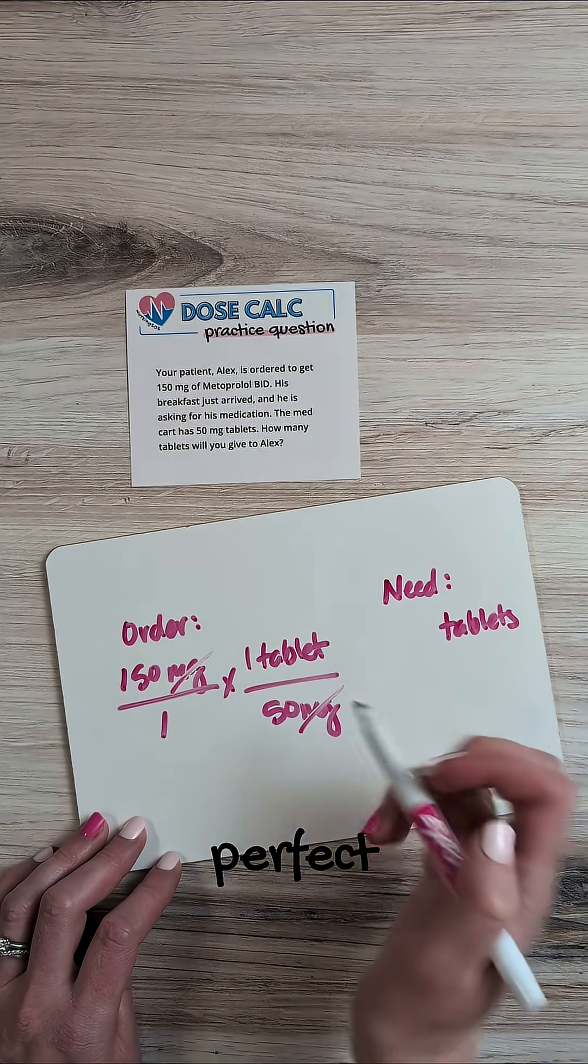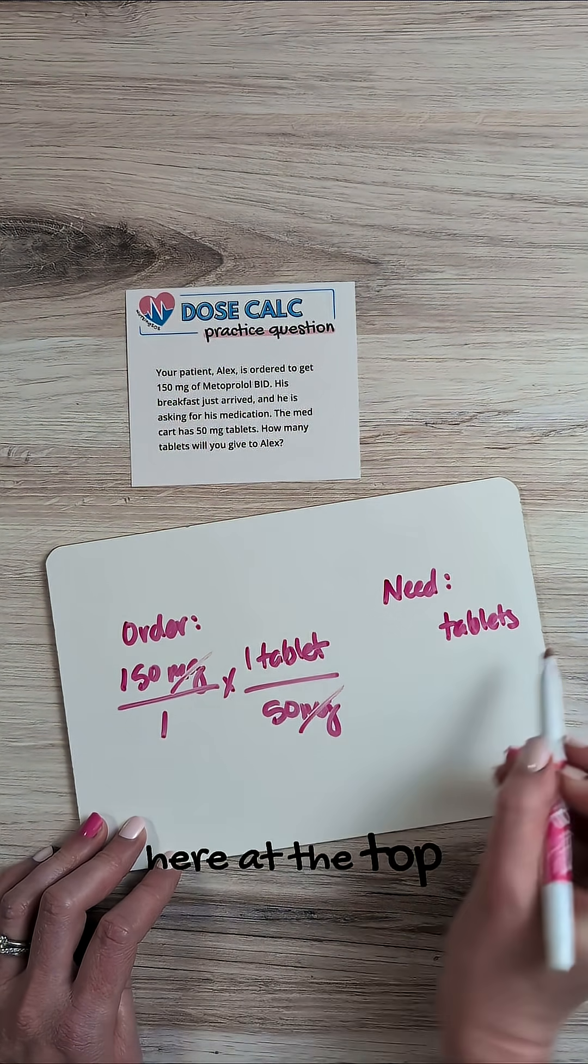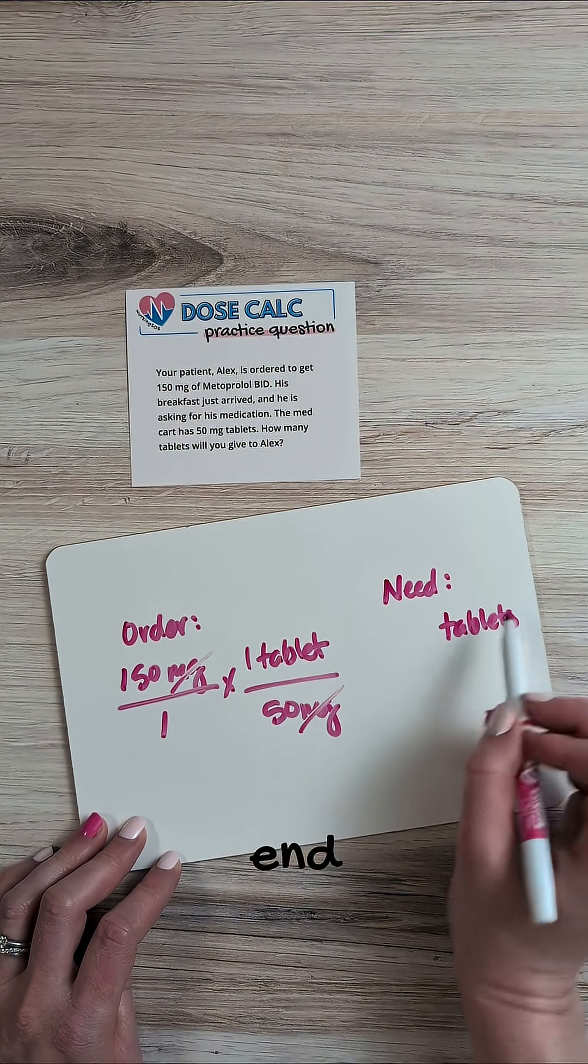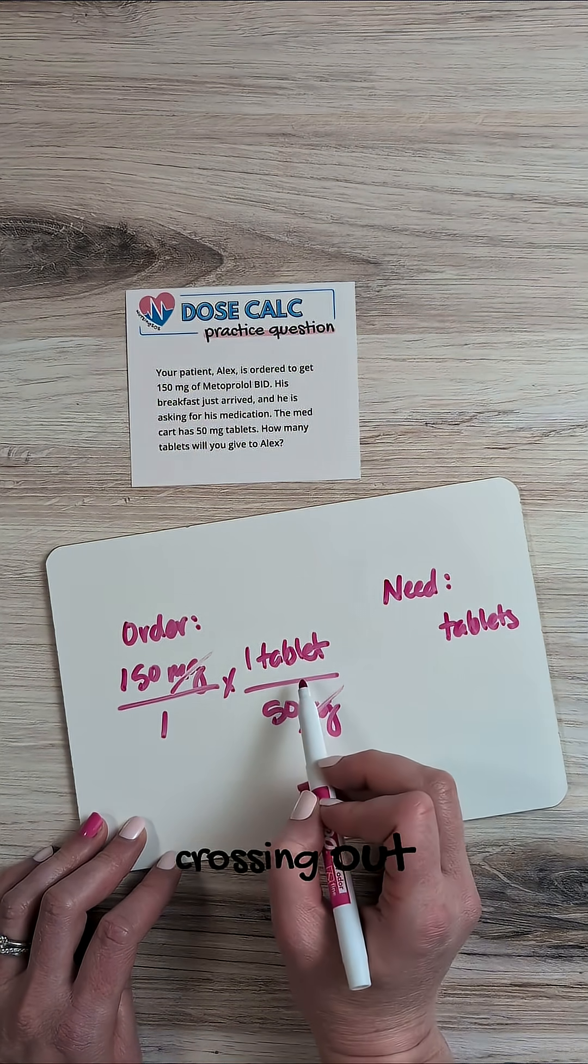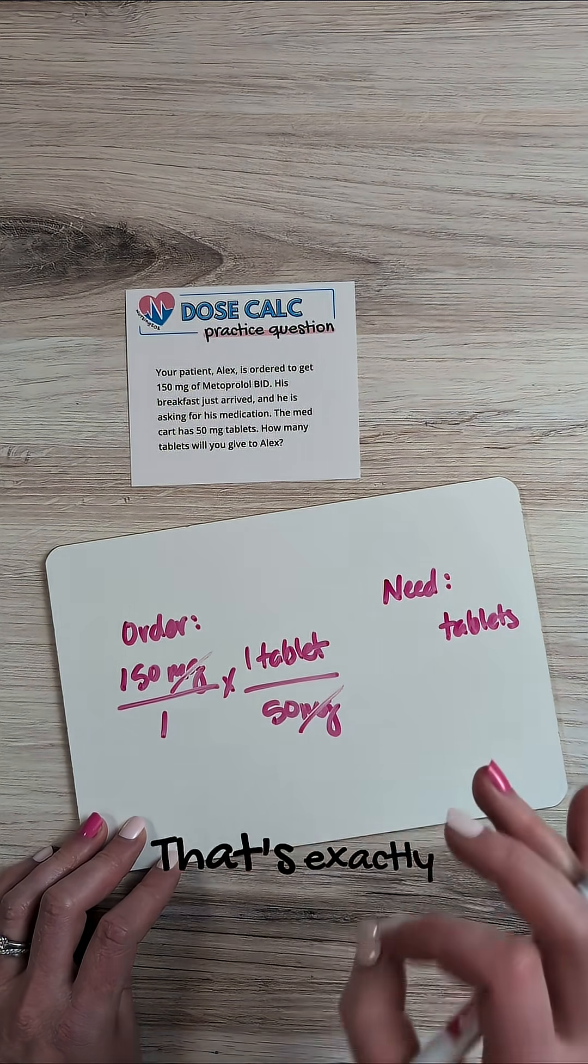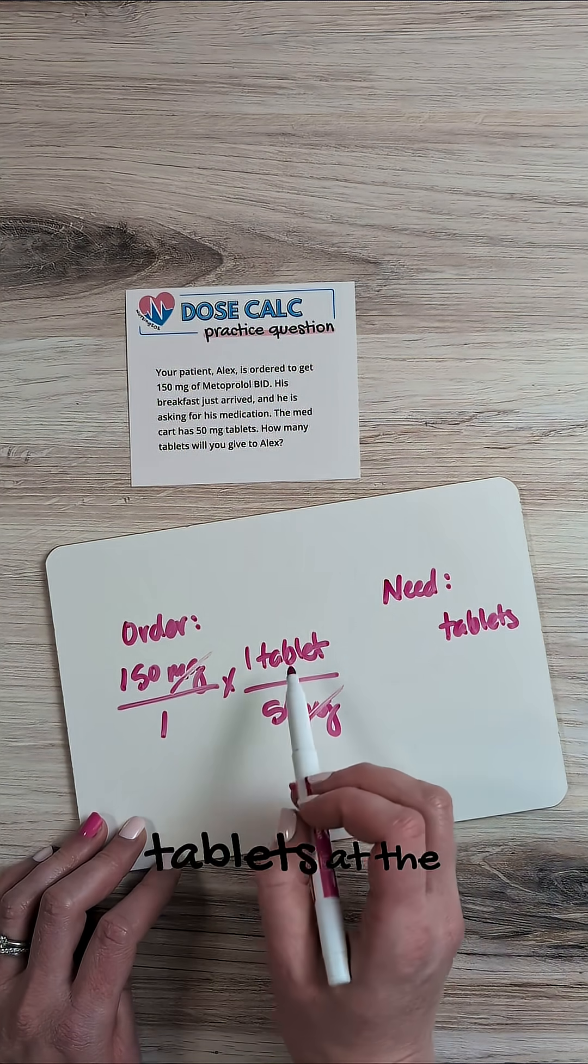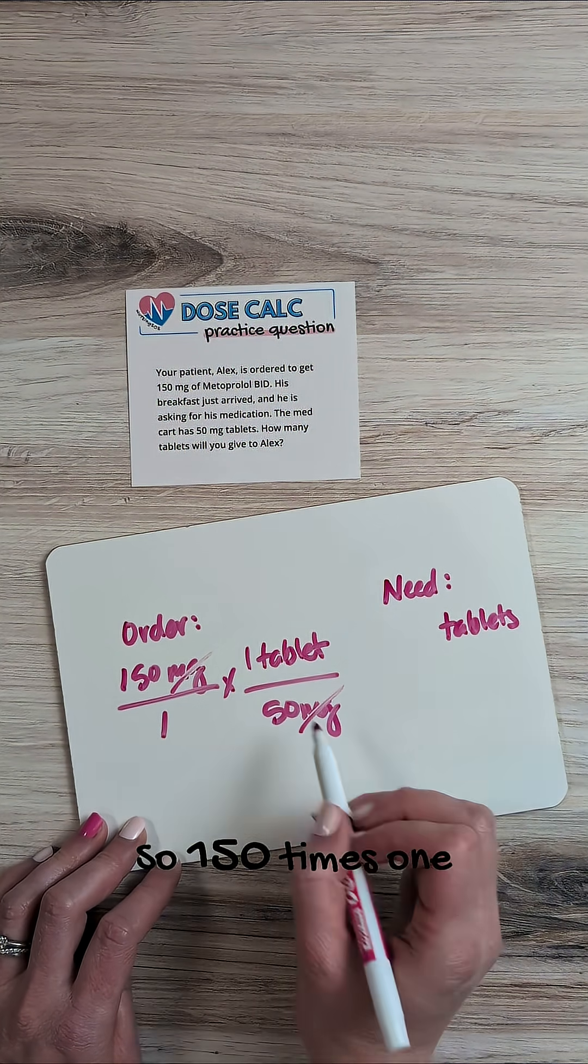Now, this is perfect because we have tablets here at the top, and we need tablets at the end. Tablets is not crossing out. That's perfect. That's exactly what we want because we want to end up with tablets at the end.